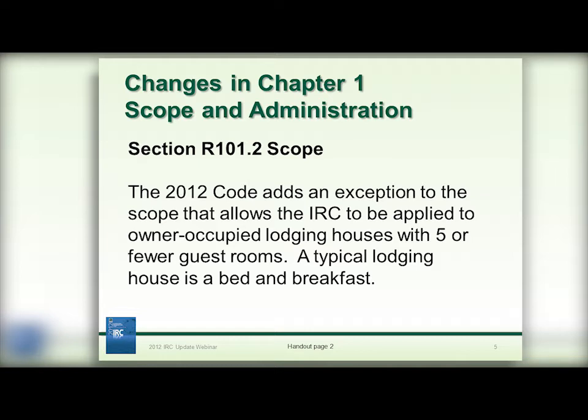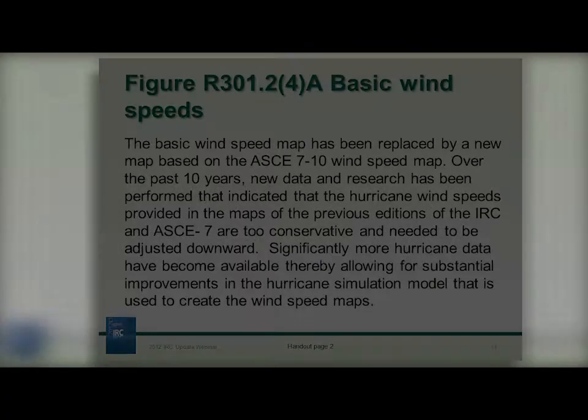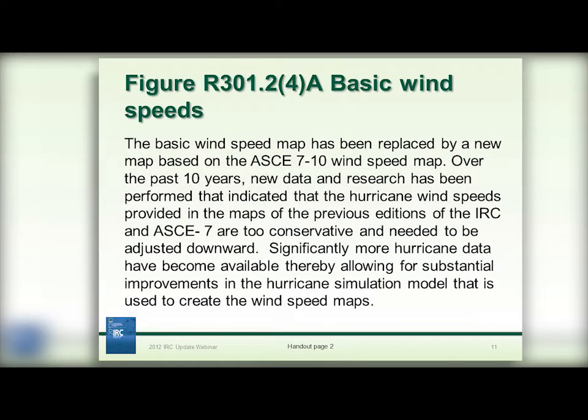The typical lodging house that we're talking about is a bed and breakfast. This is significant because in the past everything included in the scope of the IRC has essentially been permanent residences — people intending to live there for several months, years, or the rest of their lives. Now we have an accommodation in the code for owner-occupied lodging houses, which are a transient type of residential unit.